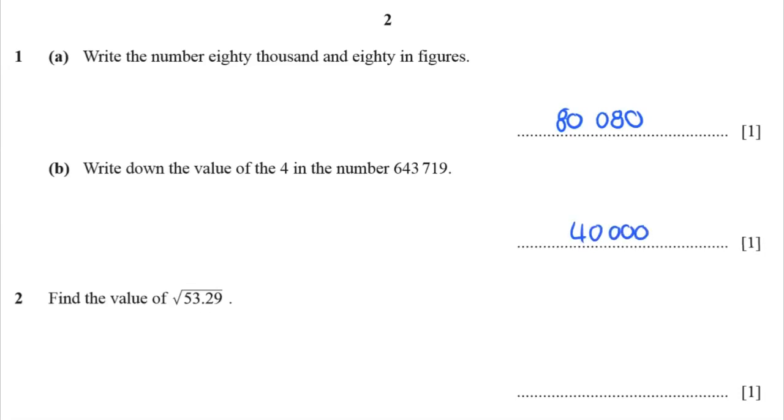Find the value of the square root of 53 point. Well, grab a calculator, type square root 53.29 and have a look. What does it say? It says 7.3. We're powering. Let's move on. What's the next question?